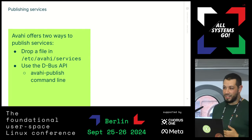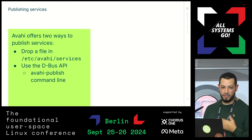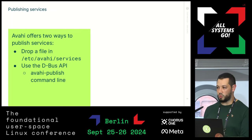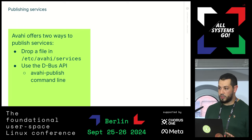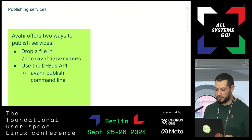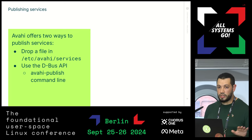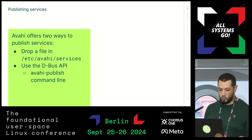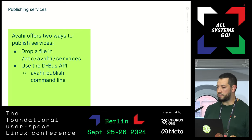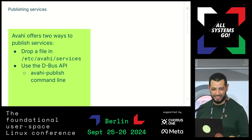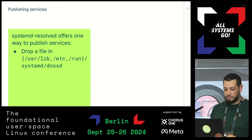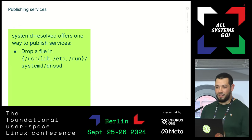The next step is actually publishing services. If I have a service on my computer that I want to publish on the network, Avahi offers two things: you can drop a file in /etc/avahi/services — it's an XML file with a specific syntax — or you can use the D-Bus API, which you can access via the avahi-publish command-line client, via the libavahi client library, or by talking D-Bus directly. For systemd-resolved, we only have the first method.